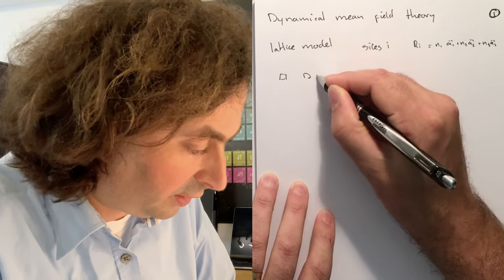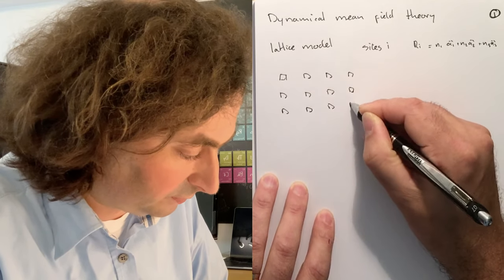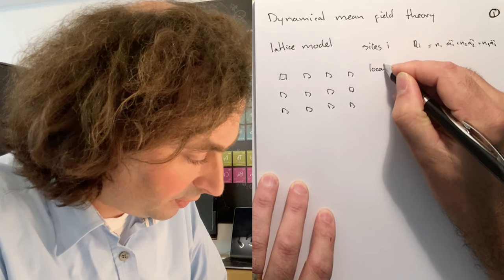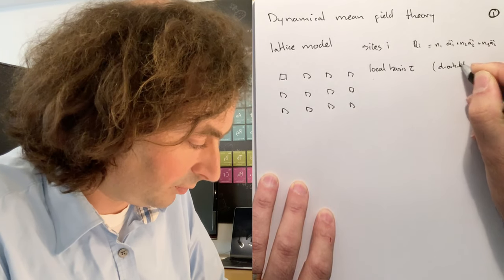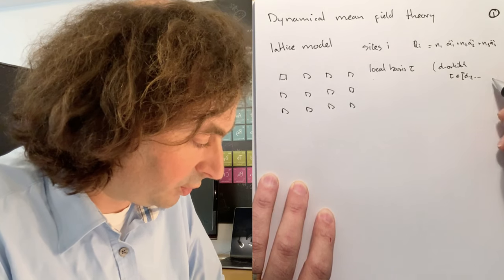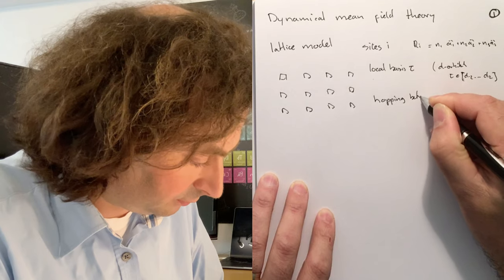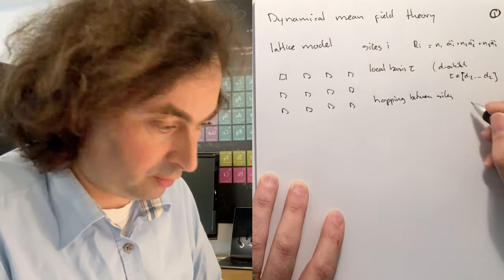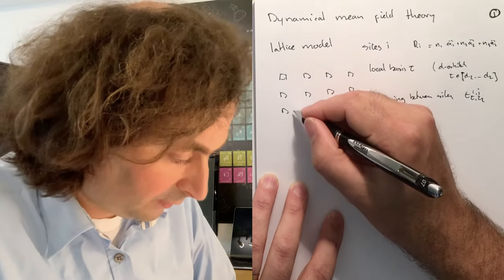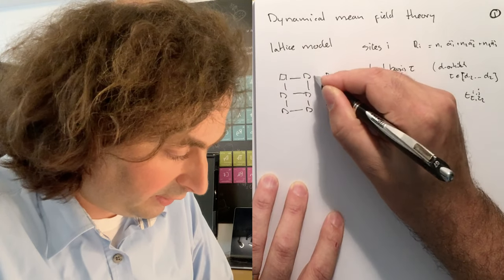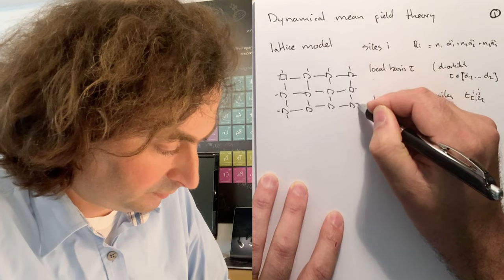If we draw our lattice model here in two dimensions, these are the lattice sites. We have a local basis which we label by tau, for example the d orbitals, where tau is an element of d minus 2 up to d2. Then we have a hopping between sites, t, which depends on the orbitals involved and also the distance with which you hop. The lines between the sites represent the hopping interaction, and it's an infinite lattice.